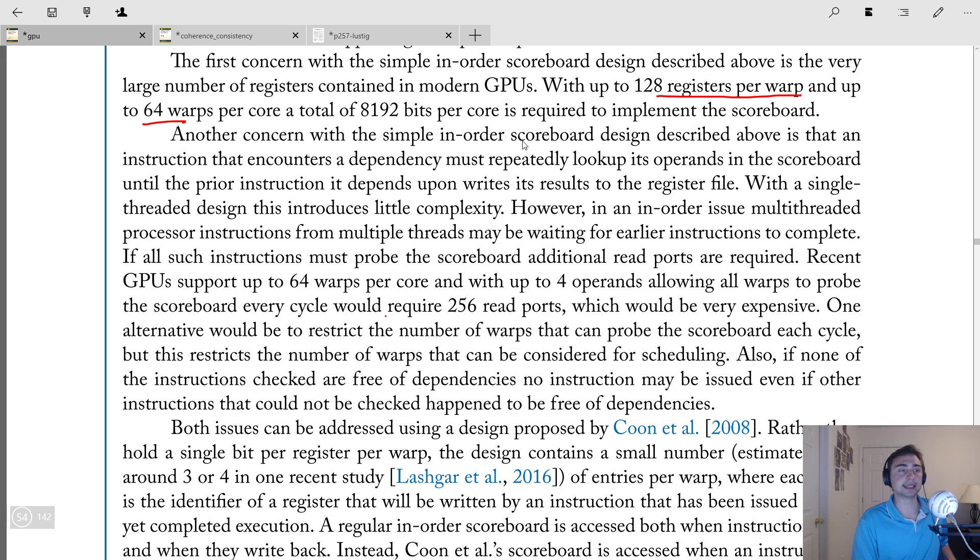Now, another concern with that simple in-order scoreboard design, if you just took it as is from the CPU and moved to the GPU is that when instruction encounters a dependency, it has to keep looking up its operands in the scoreboard to see if it's ready, to see if the dependencies are gone. Now, with a single threaded design, this incurs a little complexity, but when you have an in-order issue multi-threaded processor, instructions from multiple threads may be waiting for earlier instructions to complete. So if all such instructions must probe the scoreboard, additional read ports are required. So recent GPUs support up to 64 warps per core, as we mentioned up here, with up to four operands allowing all warps to probe the scoreboard, every cycle would require 256 read ports. Now this is just an insane number. So having something this many read ports would just be very cost prohibitive.